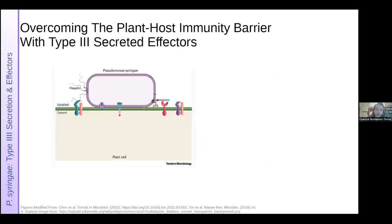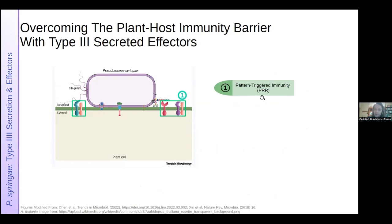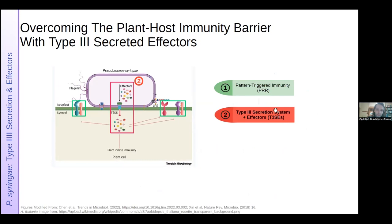How does Pseudomonas syringae effectively infect such a broad array of plants? It's able to overcome pattern-triggered immunity receptors on the plant host, which respond to conserved bacterial surface-exposed moieties like flagellin and lipopolysaccharides. Syringae overcomes this barrier by possessing a type 3 secretion system — a molecular syringe — and an arsenal of effector proteins secreted into the plant cell cytosol to suppress pattern recognition.